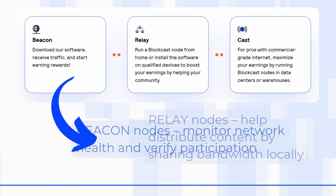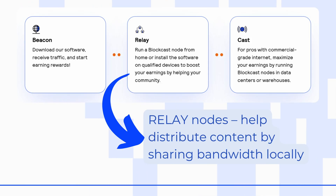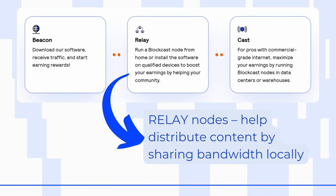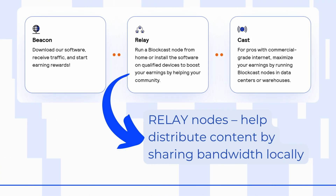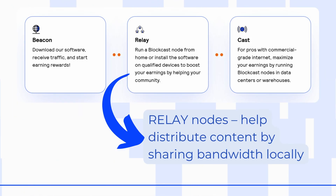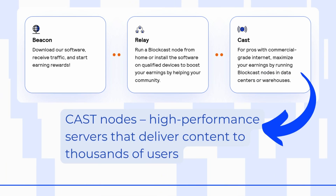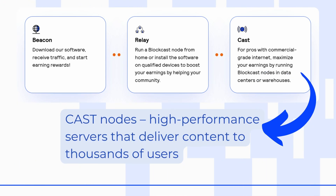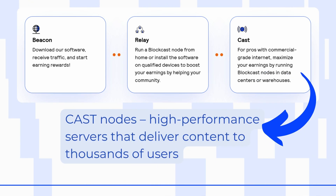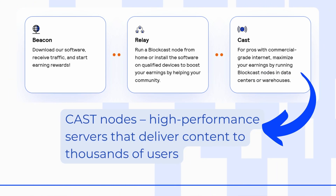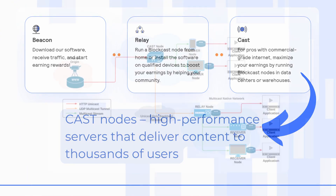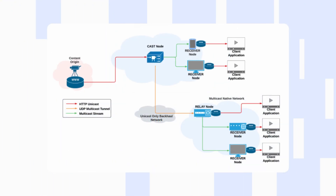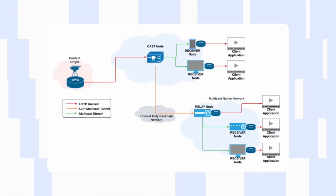Relay nodes help to distribute content by sharing bandwidth locally. Cast nodes are high-performance servers that deliver content to thousands of users. If you are interested in a more detailed guide on how everything works, I recommend checking the official documents.